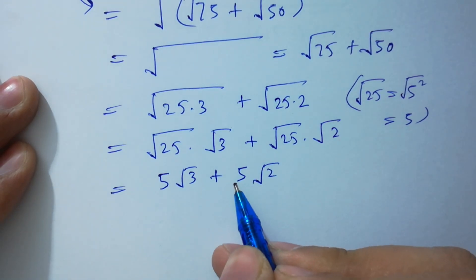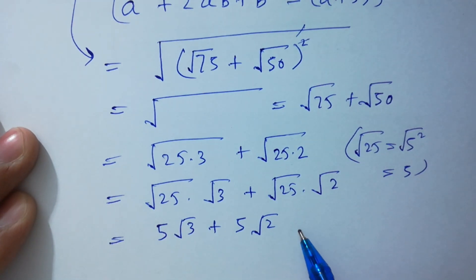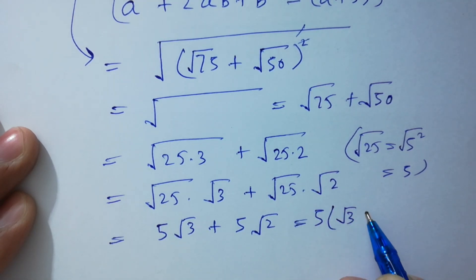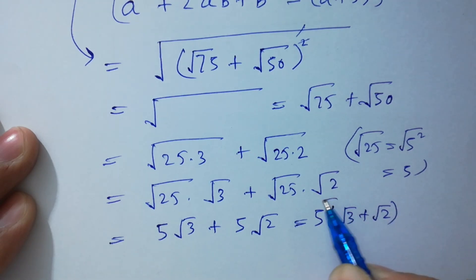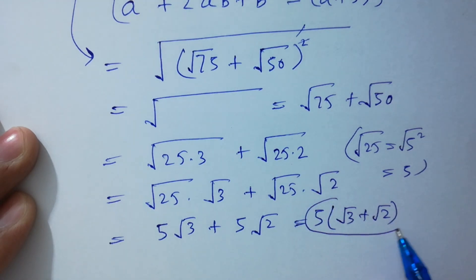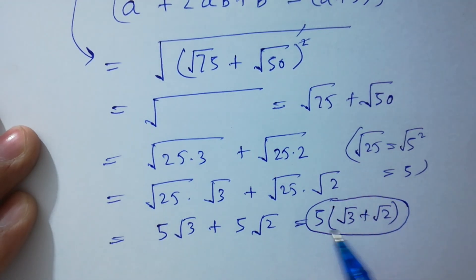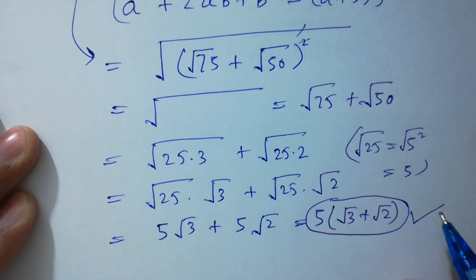Next step: 5 is common, so we have 5 times (square root of 3 plus square root of 2). So this is our final answer: 5(√3 + √2).